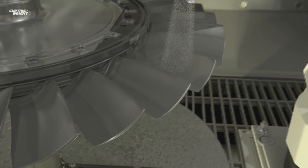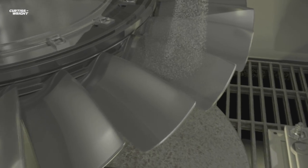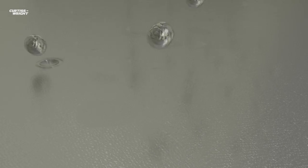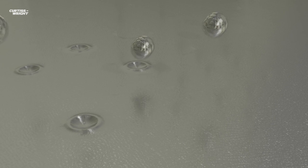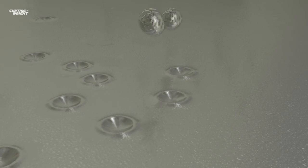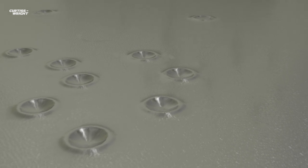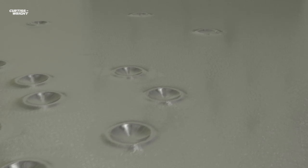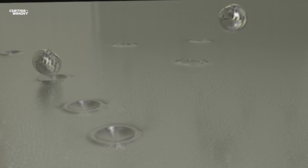Shot peening is a method of inducing compressive stress into the component by bombarding the surface with high-quality spherical media in a controlled operation. The shot can be steel, ceramic or glass and each piece produces a controlled indentation on the surface.